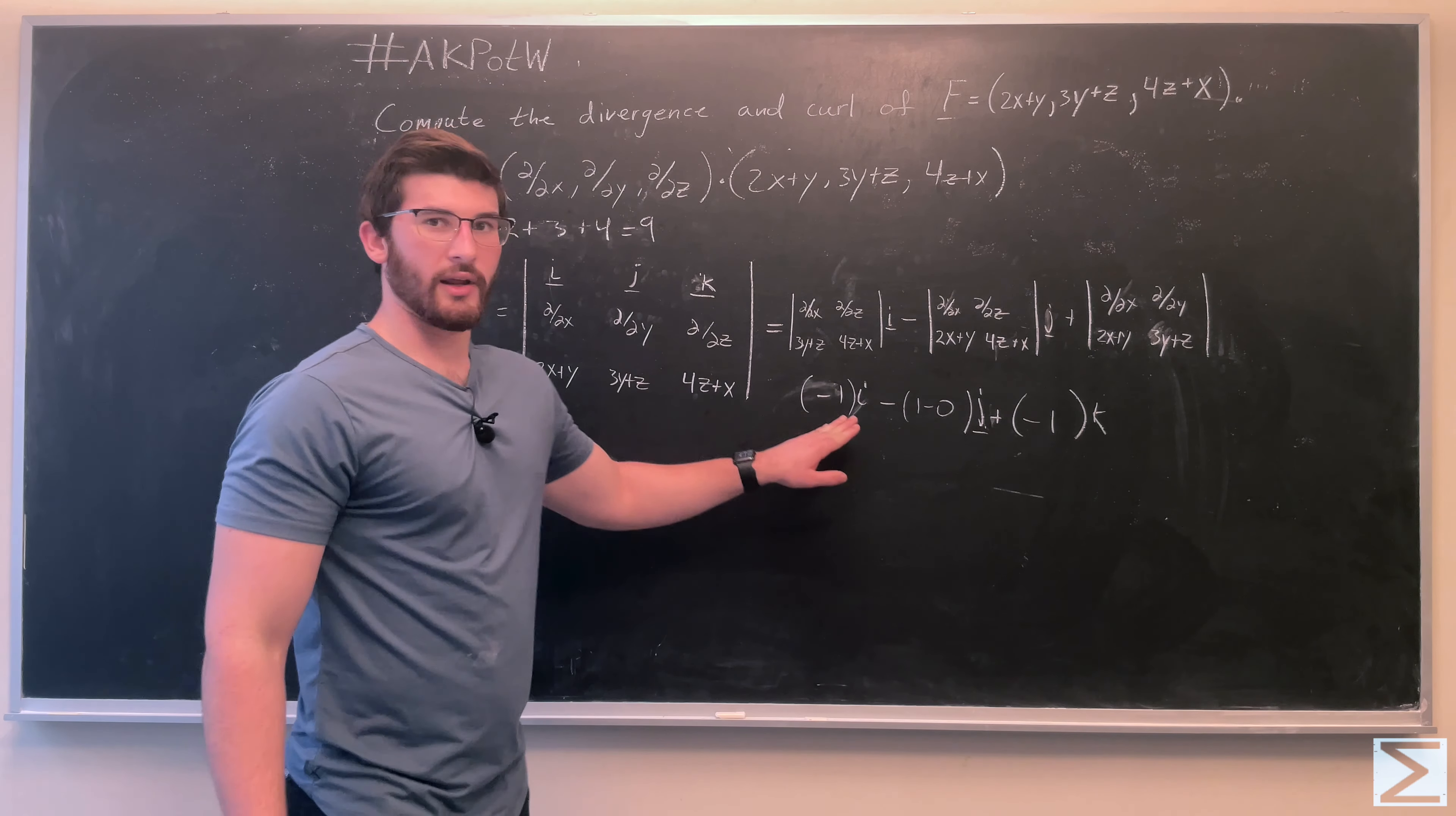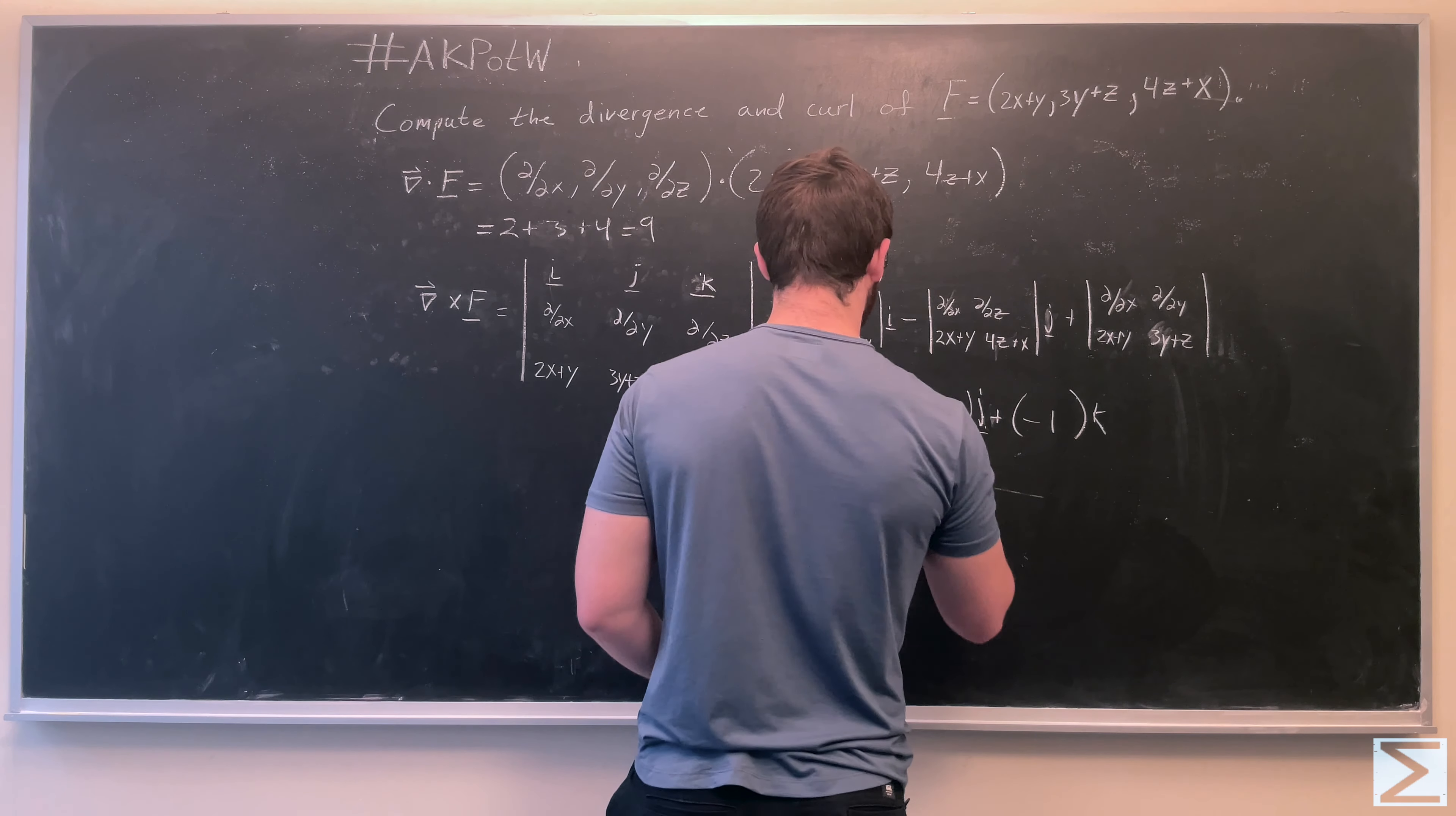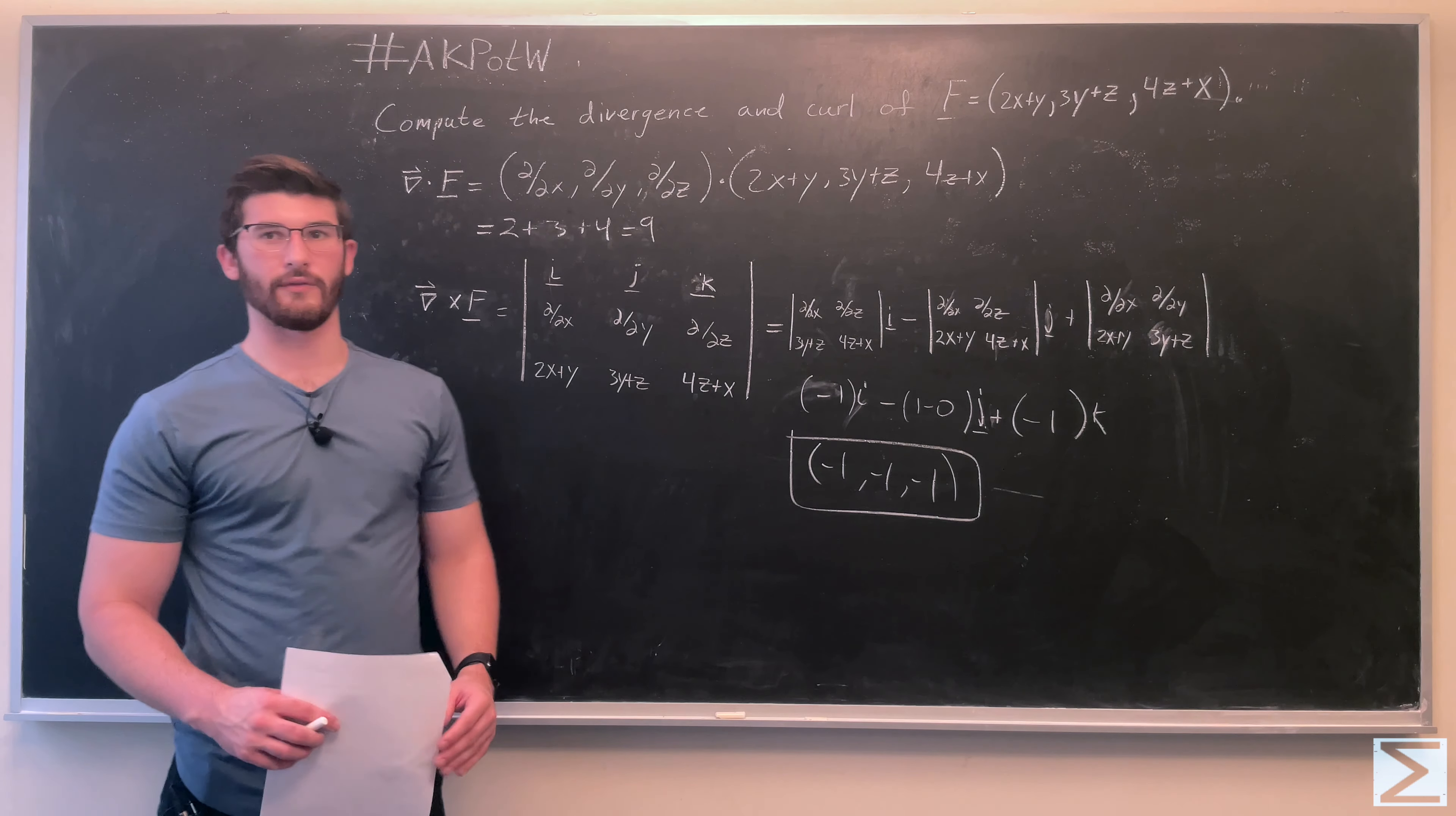So here we get negative 1i minus 1 minus 0j plus negative 1k, which is going to give us negative 1, negative 1, negative 1 as the three-dimensional curl of the vector field f.